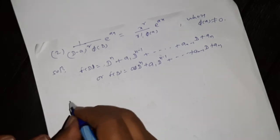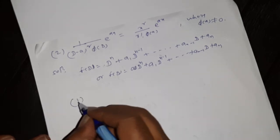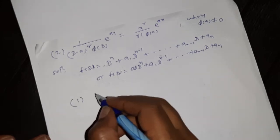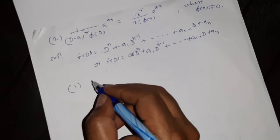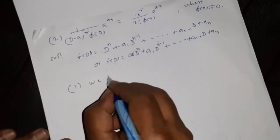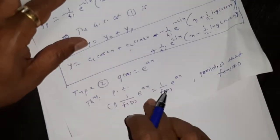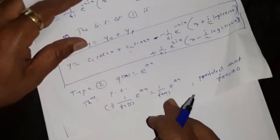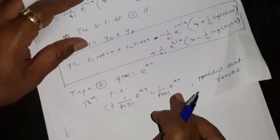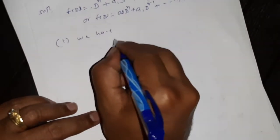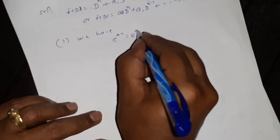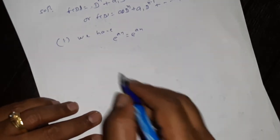Then the proof of first — we have to prove this: 1 by f(D), e raised to ax is 1 by f(a), e raised to ax. So we have the first equation: e raised to ax is equal to e raised to ax.